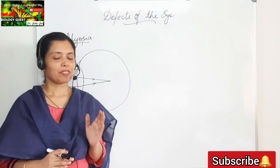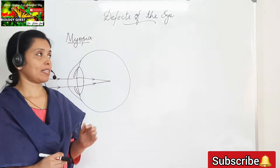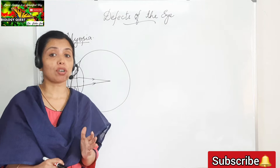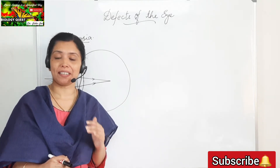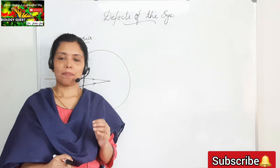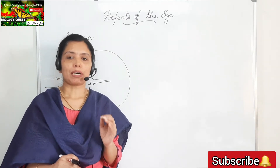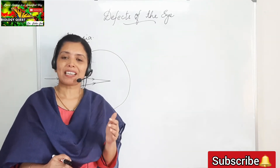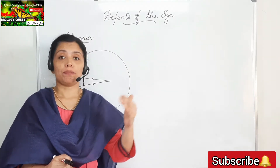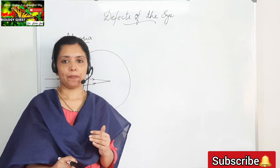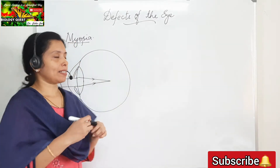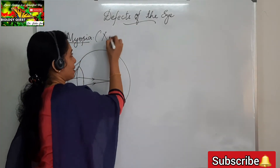The first defect we have to study is myopia. Myopia is otherwise called as short-sightedness or near-sightedness. In this condition, a person having myopia is able to see nearby objects clearly, but distant objects appear blurred. That is why it is called as short-sightedness or near-sightedness.